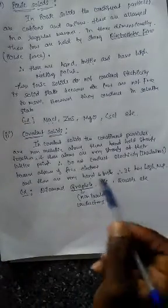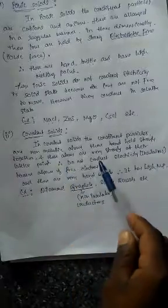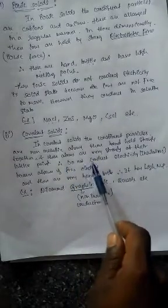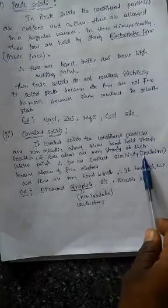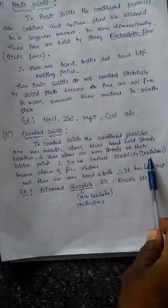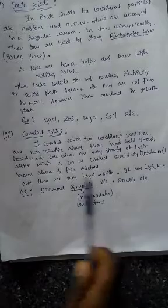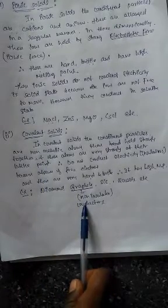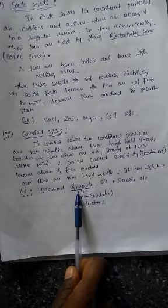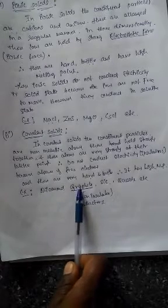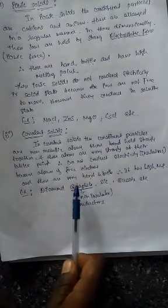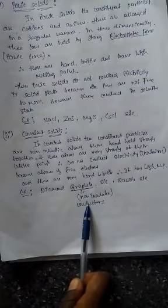These are all examples of covalent solids. Although all covalent solids do not conduct electricity and are called insulators, graphite is an exception — it conducts electricity due to the presence of unsaturation, such as alternating single and double bonds.